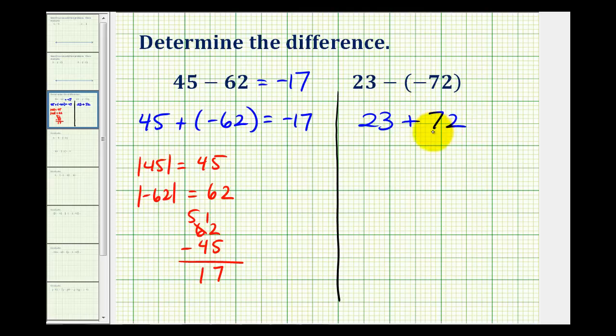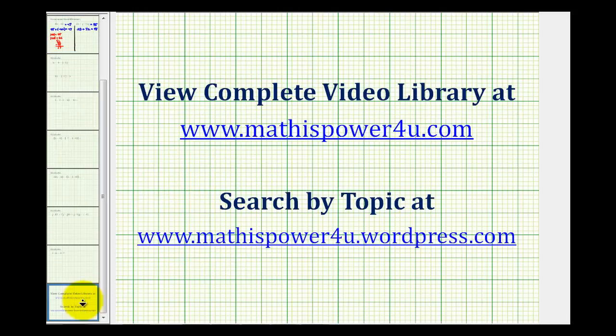Now it's a very straightforward addition problem. 23 plus 72 is equal to 95, and therefore this difference is equal to 95 as well.